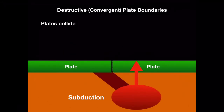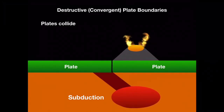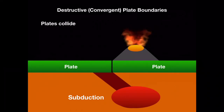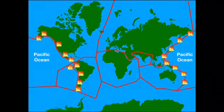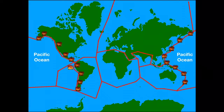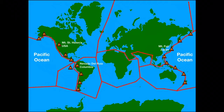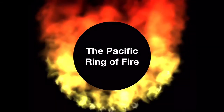The molten material, known as magma, will rise to the surface and may erupt to form volcanoes. These volcanoes are located along destructive plate boundaries which border the Pacific Ocean. Two examples are Mount St. Helens in the United States and Mount Fuji in Japan. This active volcanic zone is known as the Pacific Ring of Fire.